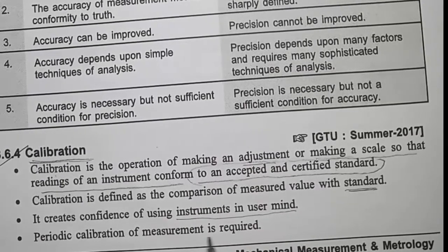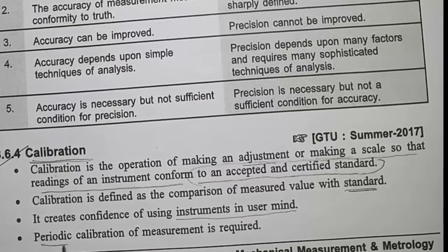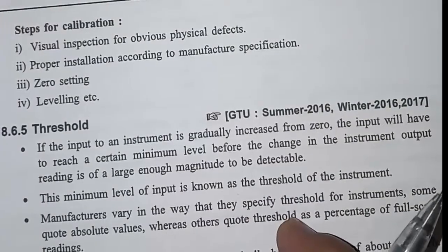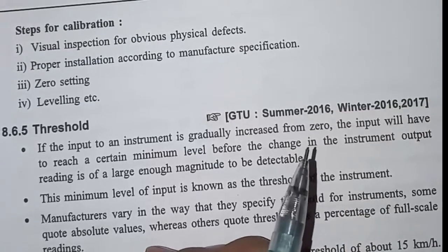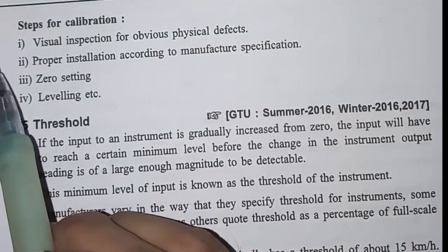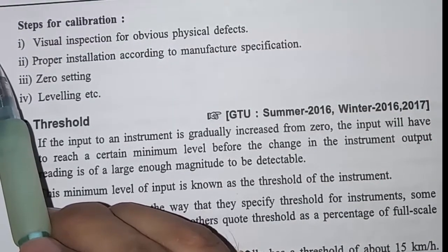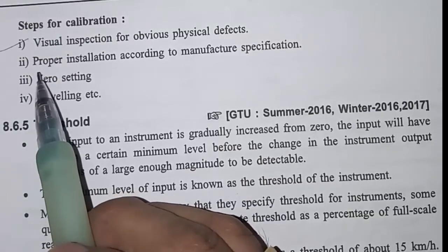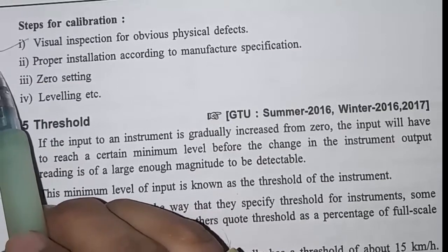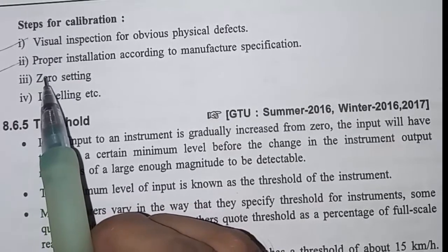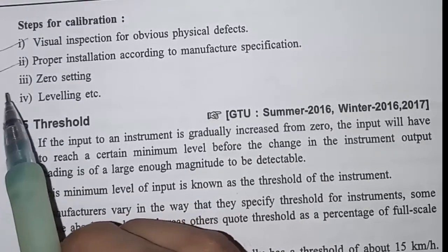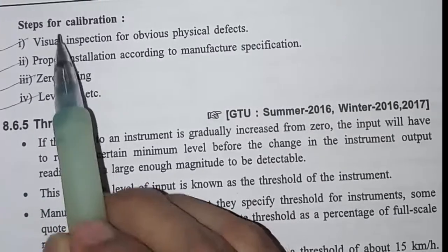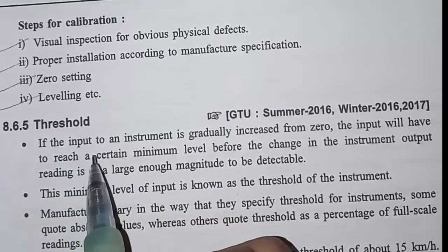It creates confidence in using the instruments in the user's mind. Periodic calibration of measurement instruments is required. The steps for calibration are: first, visual inspection for obvious physical defects; second, proper installation according to the manufacturer's specification; third, zero setting; and fourth, leveling.